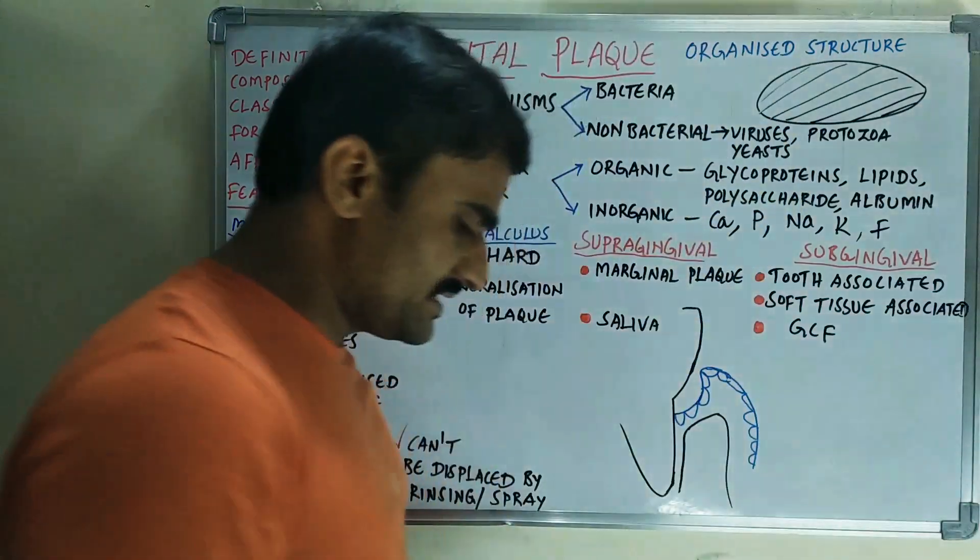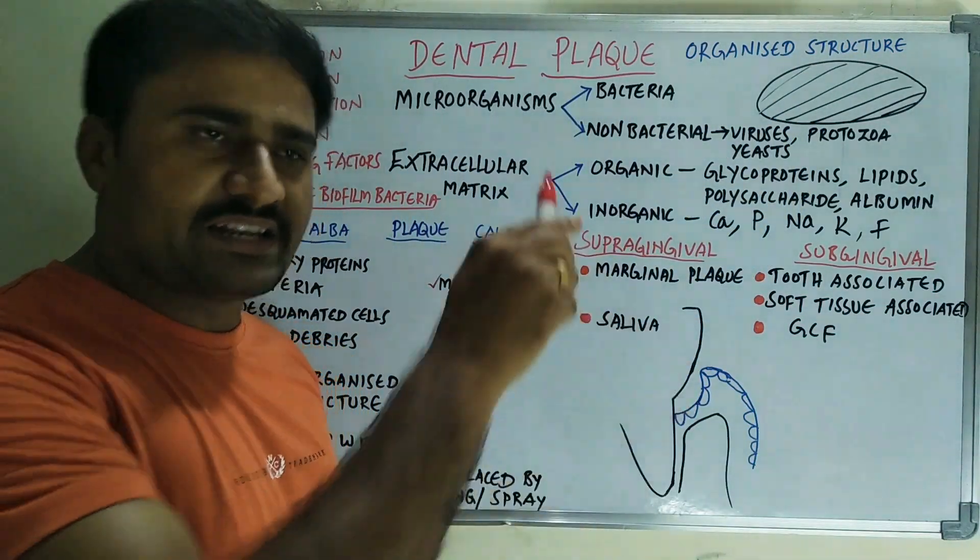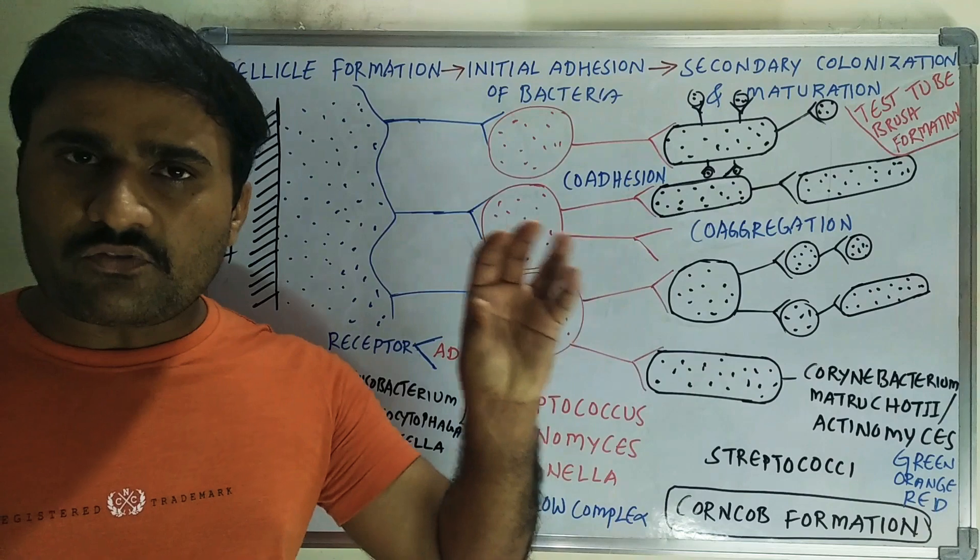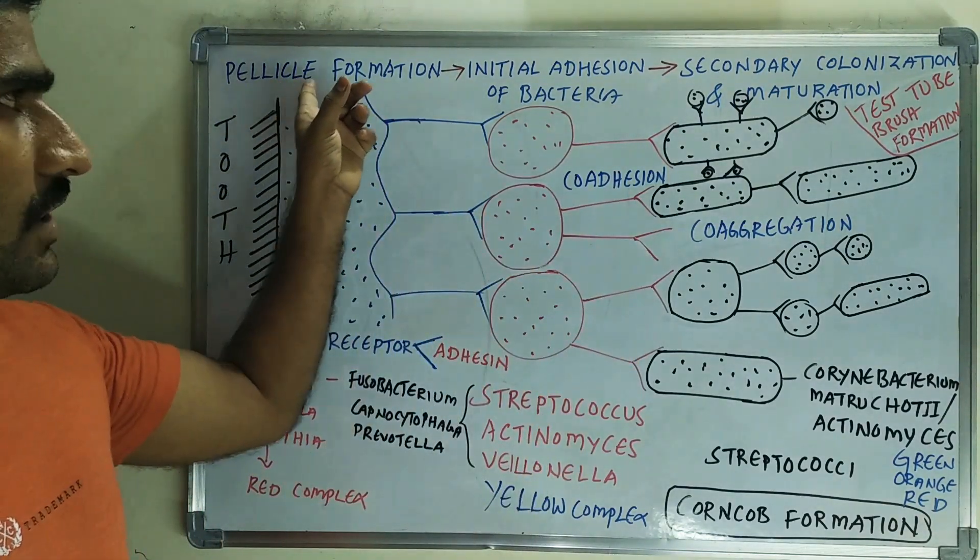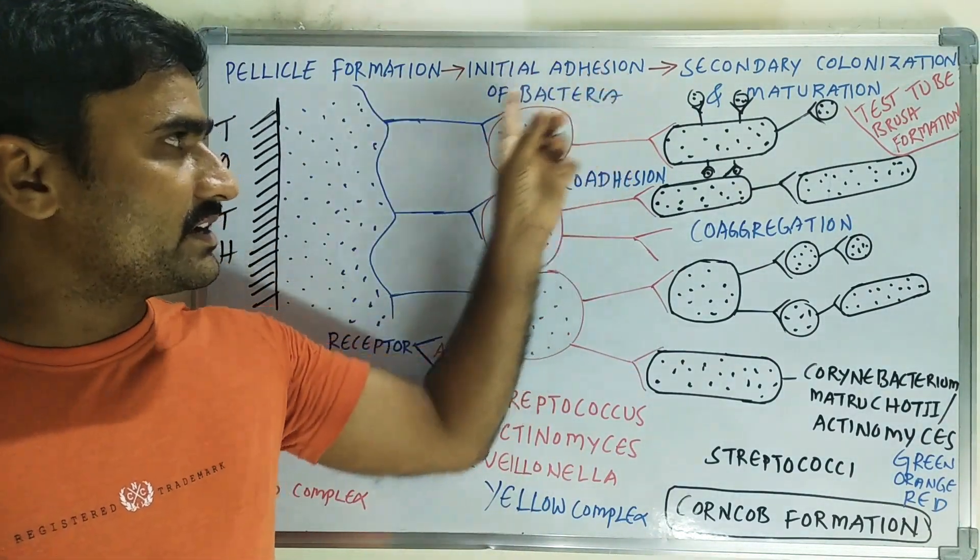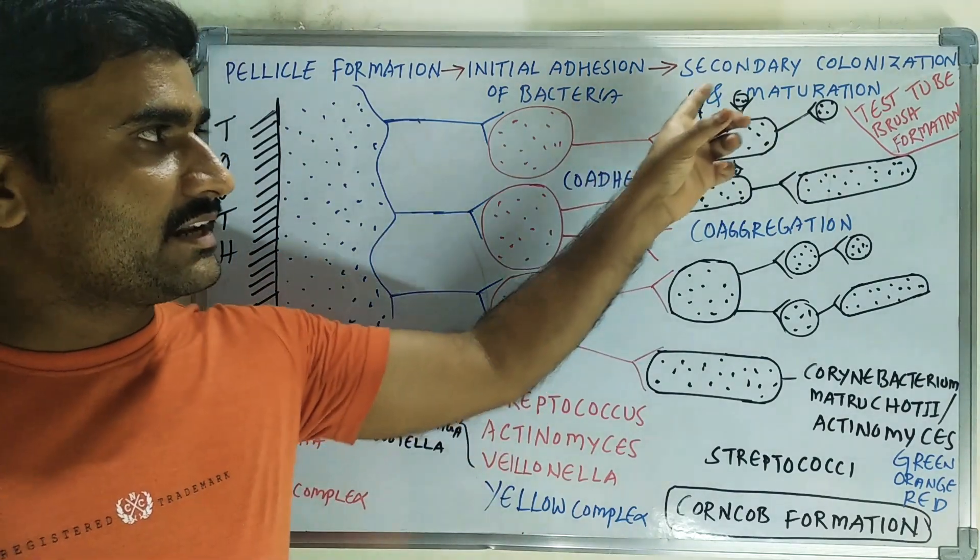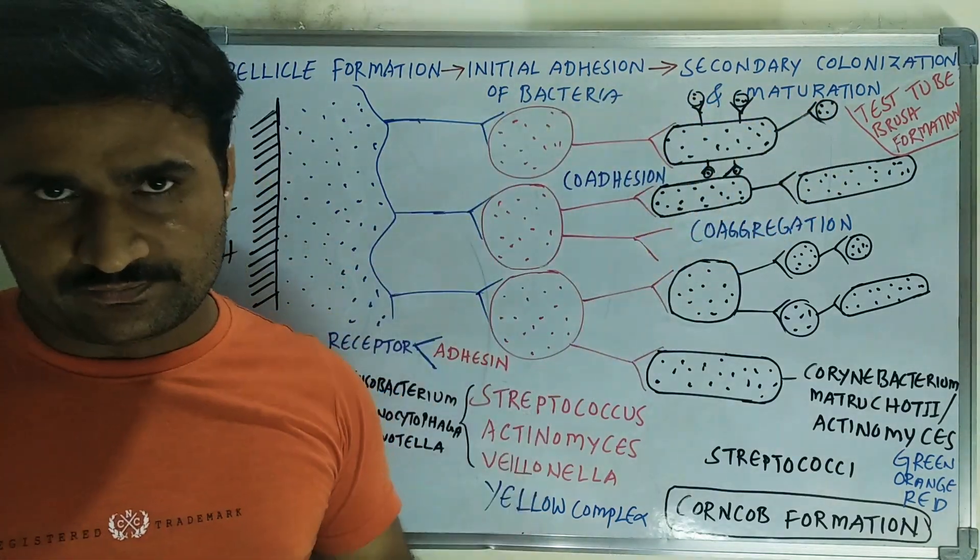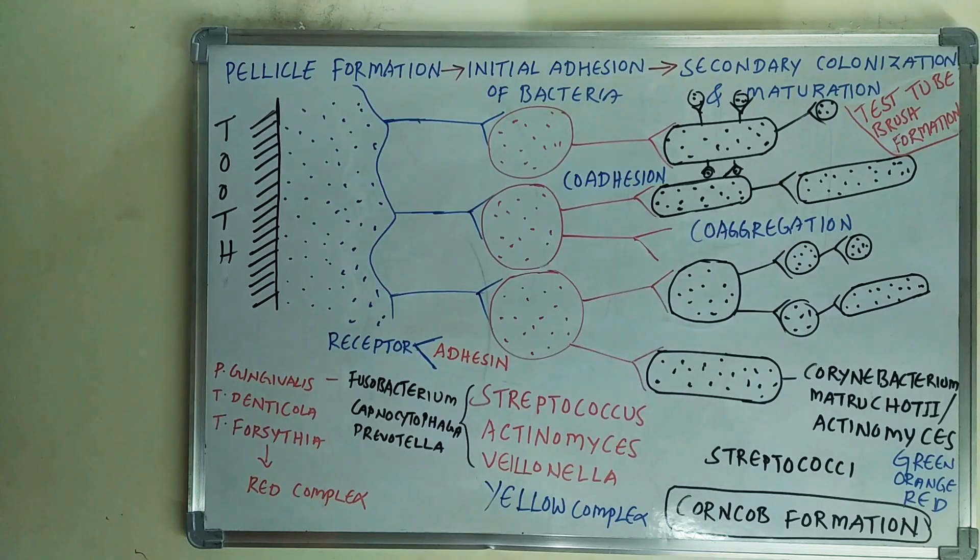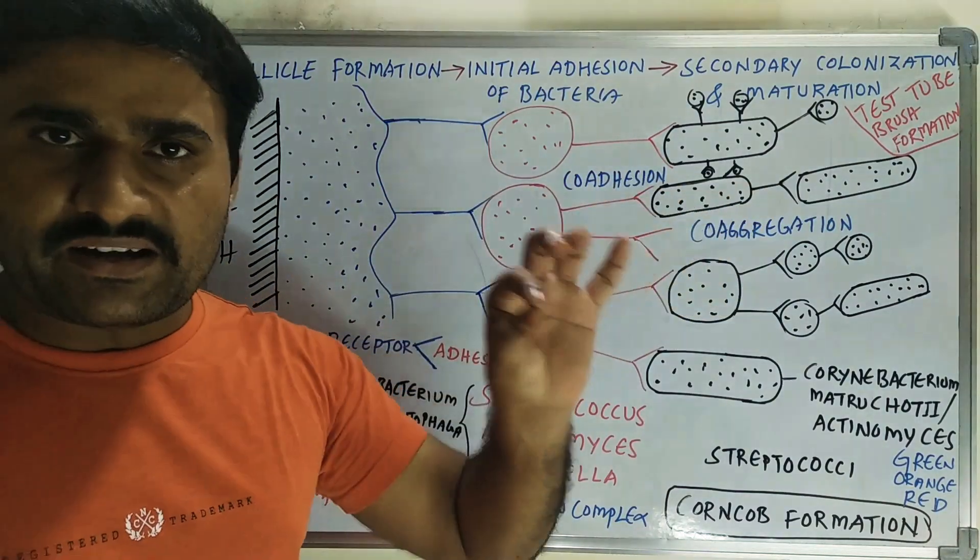Within the extracellular matrix, there are three stages in the formation of plaque. First is pellicle formation, then initial adhesion of bacteria, and secondary colonization and maturation. You can draw this schematic diagram.